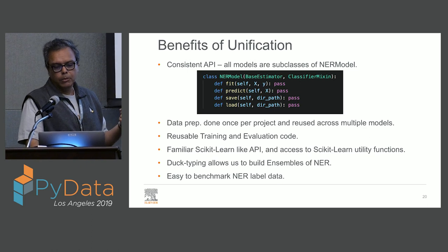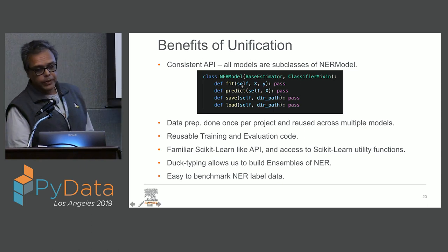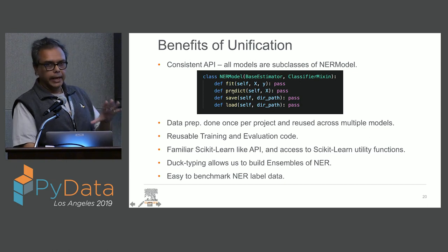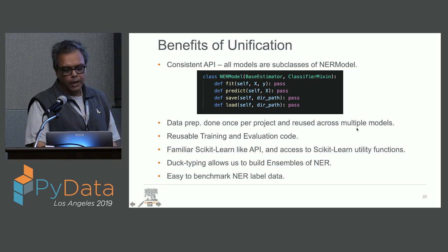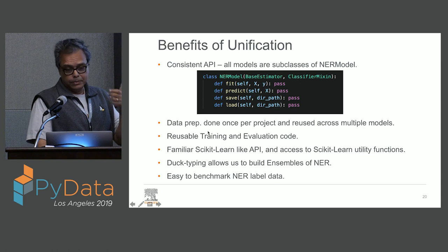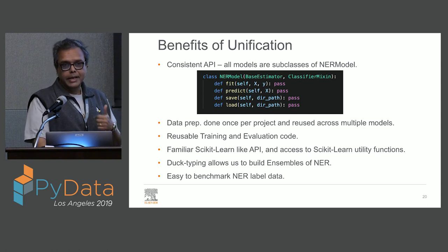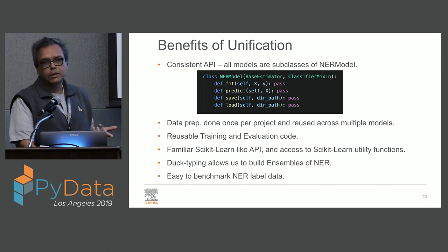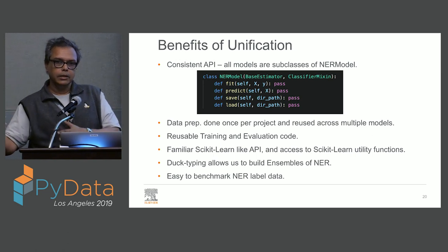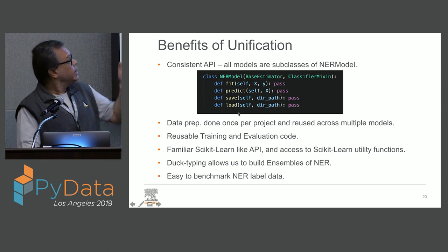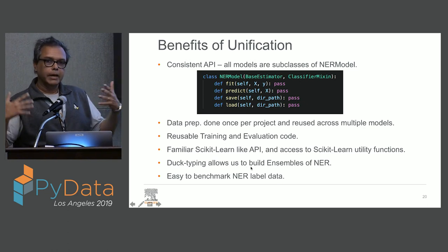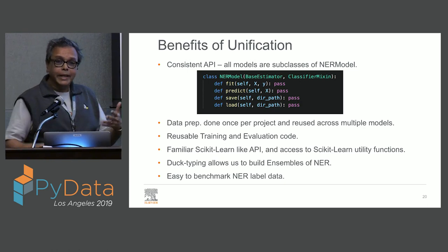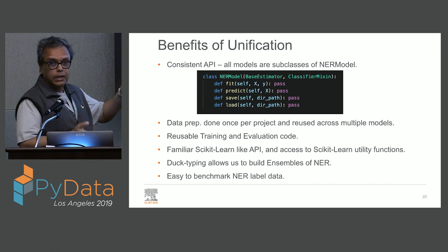The benefits include a consistent API — all models are subclasses of a base NER model. You have four methods: fit for training, predict for predicting, save to save your model to disk, and load to retrieve it. It's very scikit-learn-like, although not exactly scikit-learn-compatible. One big advantage is that you only need to do data preparation once and can reuse it across different models. And because all models have the same API — the Python duck-typing idea — it allows us to build ensembles out of them.